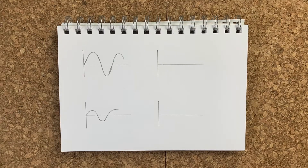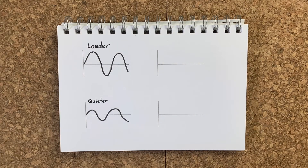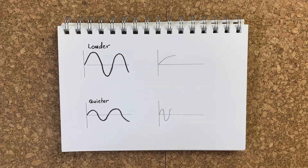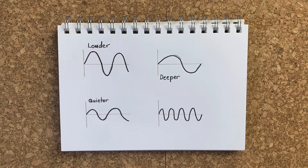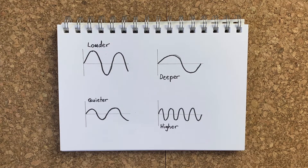Amplitude determines how loud a sound is. The greater the amplitude, the greater the volume. Frequency determines the pitch. The faster it vibrates, the higher it will sound, and the slower it is, the lower it will sound.